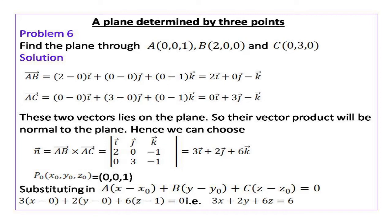So we have the values of a, b, c, x0, y0 and z0. Substituting these values into the plane's equation a(x - x0) + b(y - y0) + c(z - z0) = 0 and simplifying, we have 3x + 2y + 6z = 6.